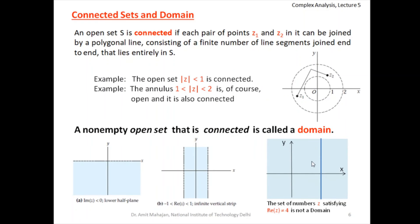If we take any point z₁ on the left side and any point z₂ on the right side, these two points cannot be joined by any straight line without leaving the set — the path must cross the excluded line x = 4. So this set is not a domain because it is not connected.